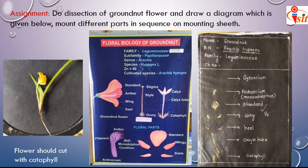The procedure of emasculation and pollination is exactly the same as in moth bean, broad bean, and soybean. First, remove the calyx tube at the hood stage, slightly open the flower with a needle, remove the bunch of 10 anthers, and then use pollen from another flower to pollinate the gynoecium.